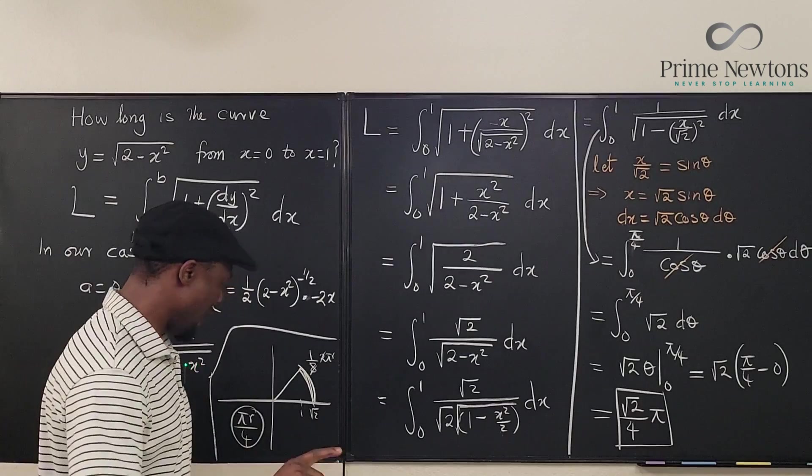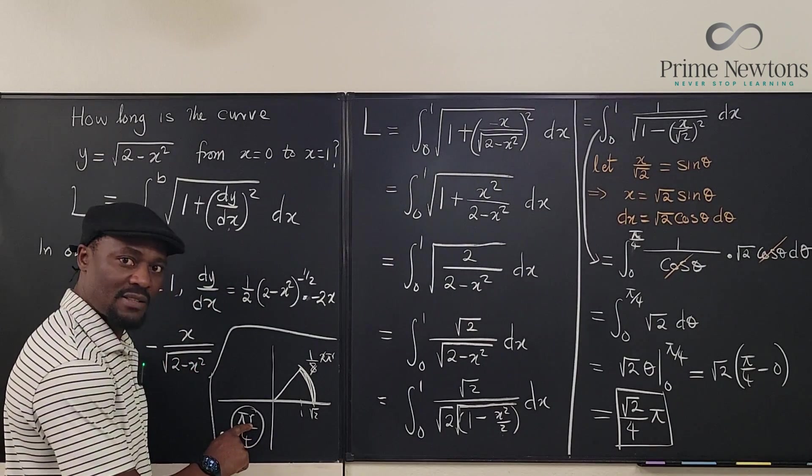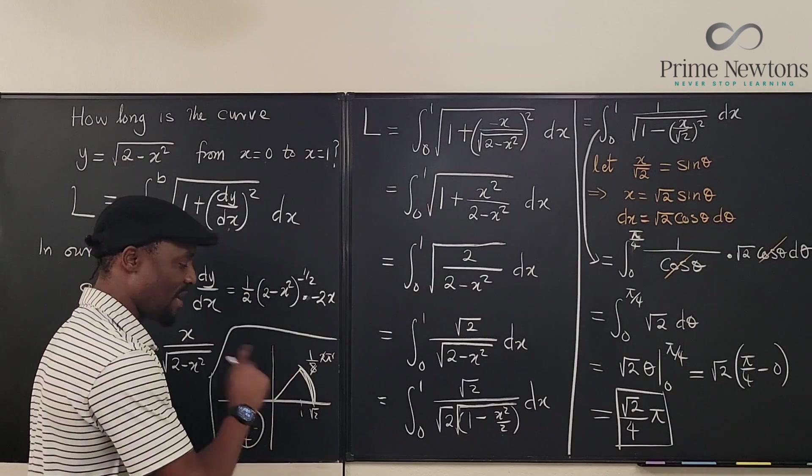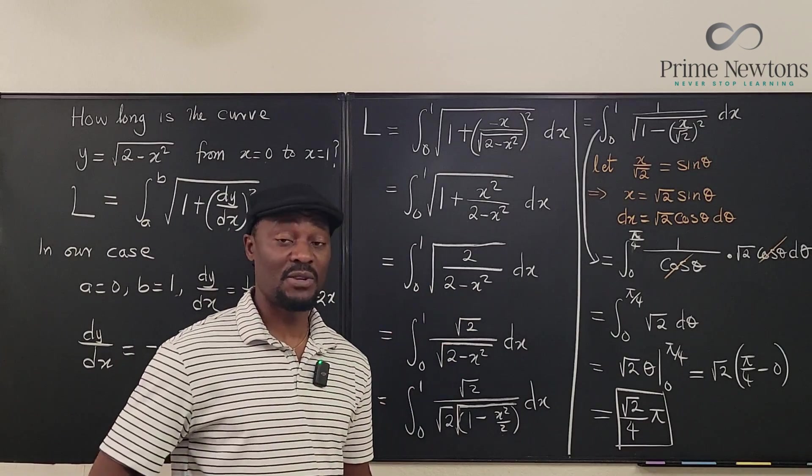And I think it matches what we said before. The radius is square root of 2. Square root of 2 over 4 π. So it is about one eighth of the length of the perimeter of a circle.